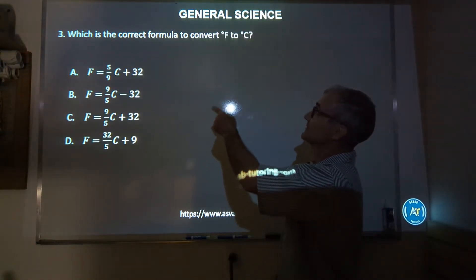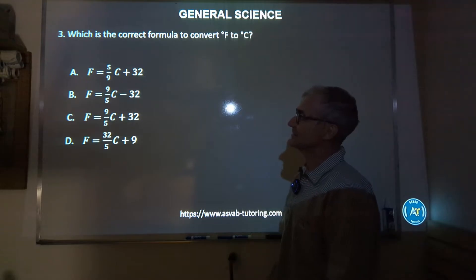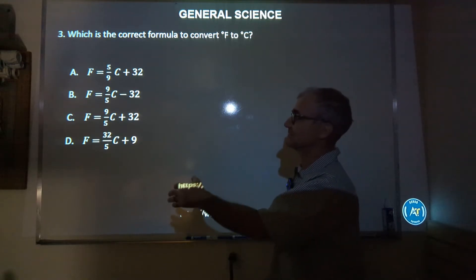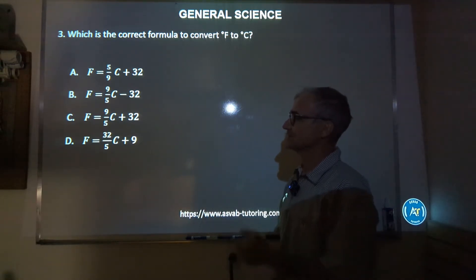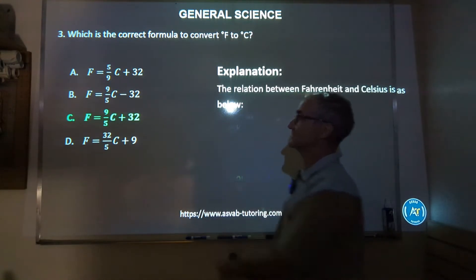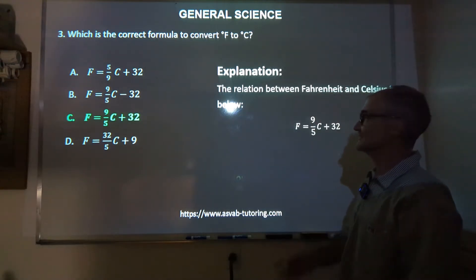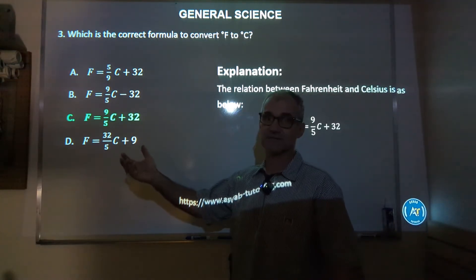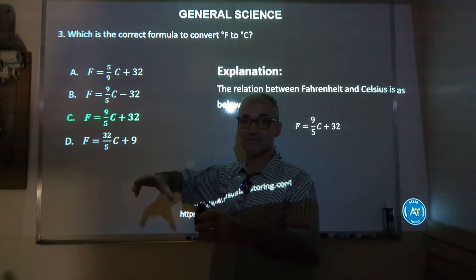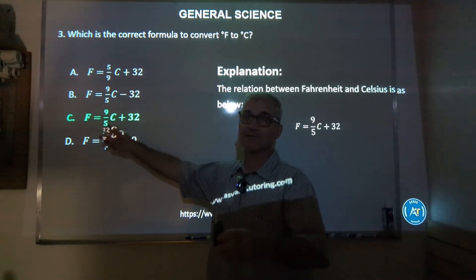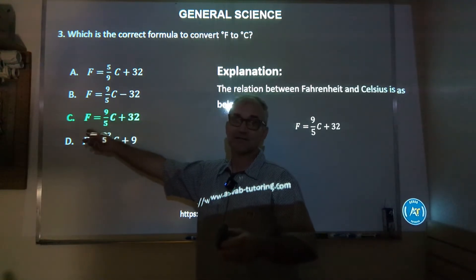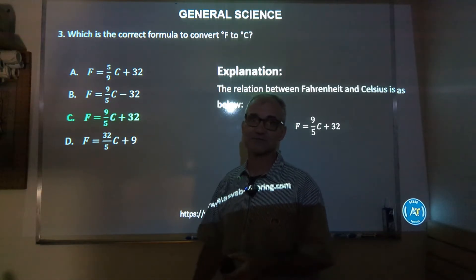Number three: which is the correct formula to convert Fahrenheit to Celsius? The correct answer is C: Fahrenheit is equal to nine-fifths Celsius plus 32. The way you would do that is take the amount of Celsius degrees — let's say it's 30 degrees outside in Celsius — plug it in, multiply by nine to get 270, divide that by five to get about 54, and then add 32 to get your Fahrenheit degrees. So 30 degrees Celsius would be about 86 degrees Fahrenheit.